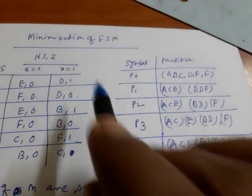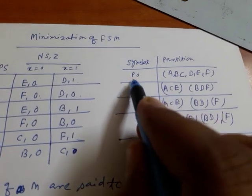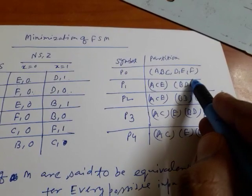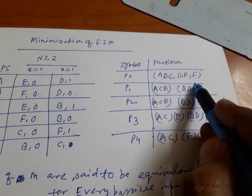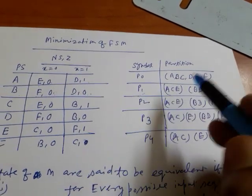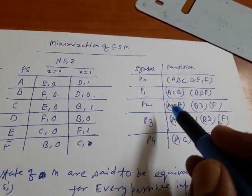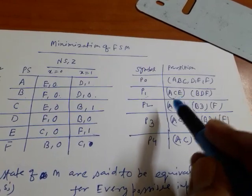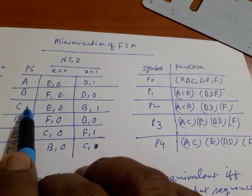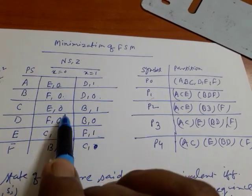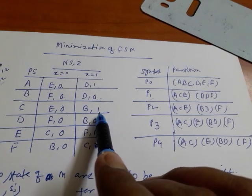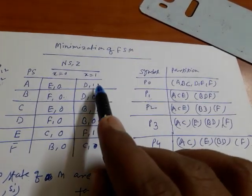Now see the figure — here is how we can minimize the given finite state machine. For P0, all the states are part of the same partition. For P1, we check which states are equivalent. I already checked that a and c are equivalent because for input 0 they produce the same output sequence and for input 1 they also produce the same output sequence.